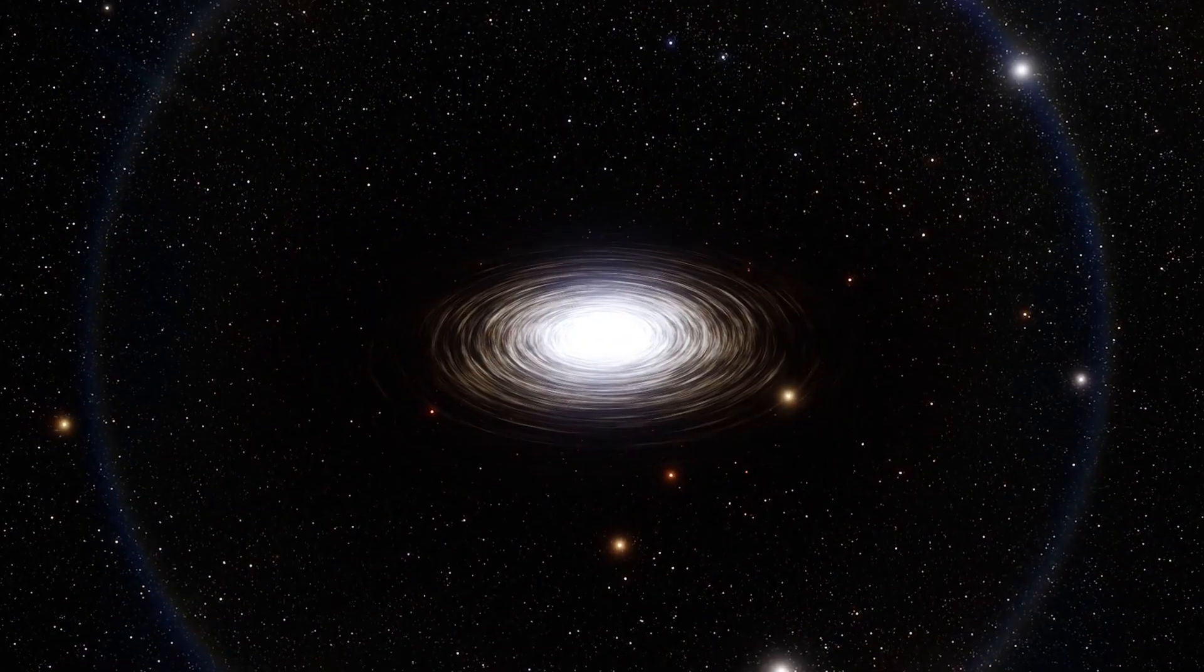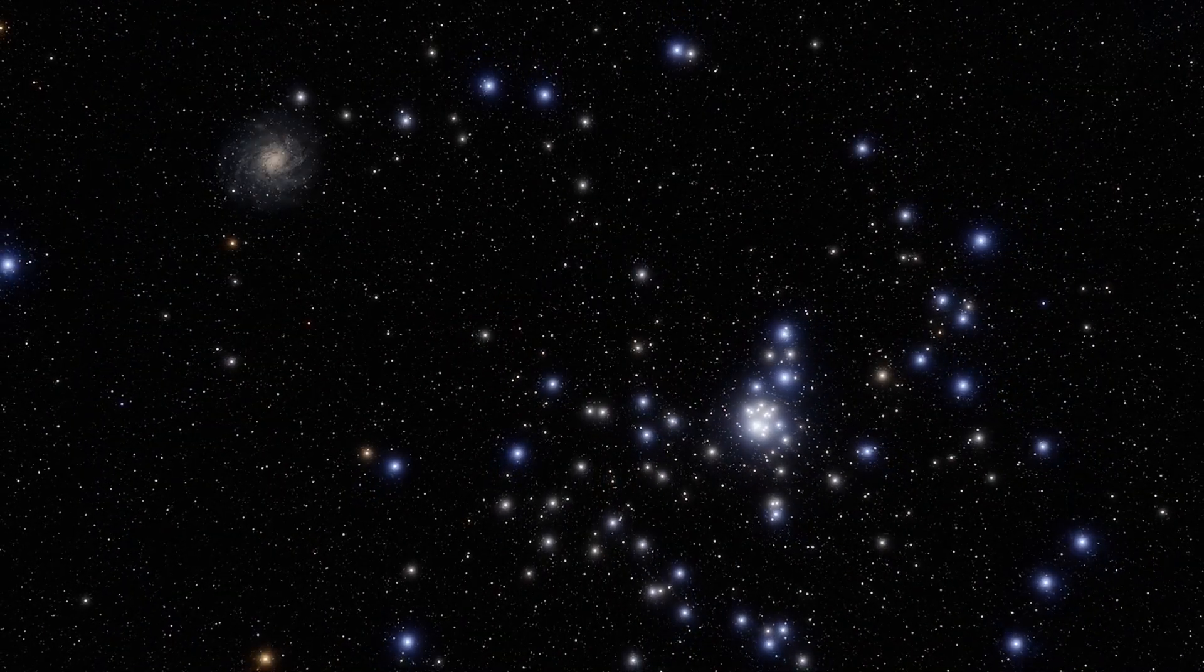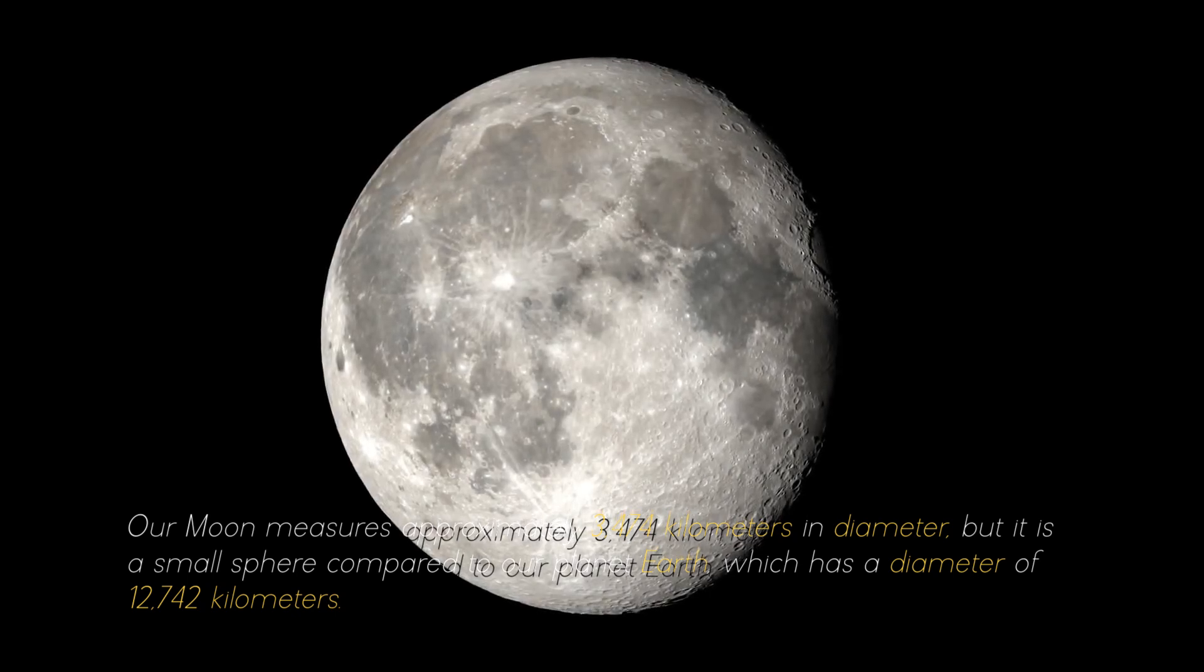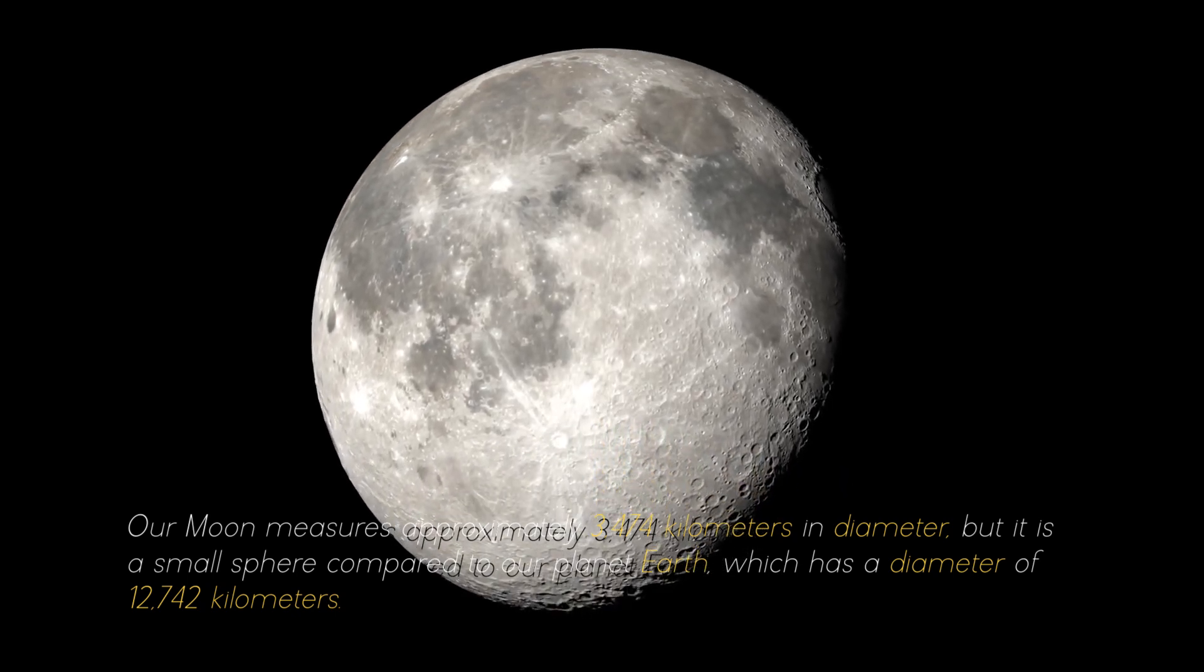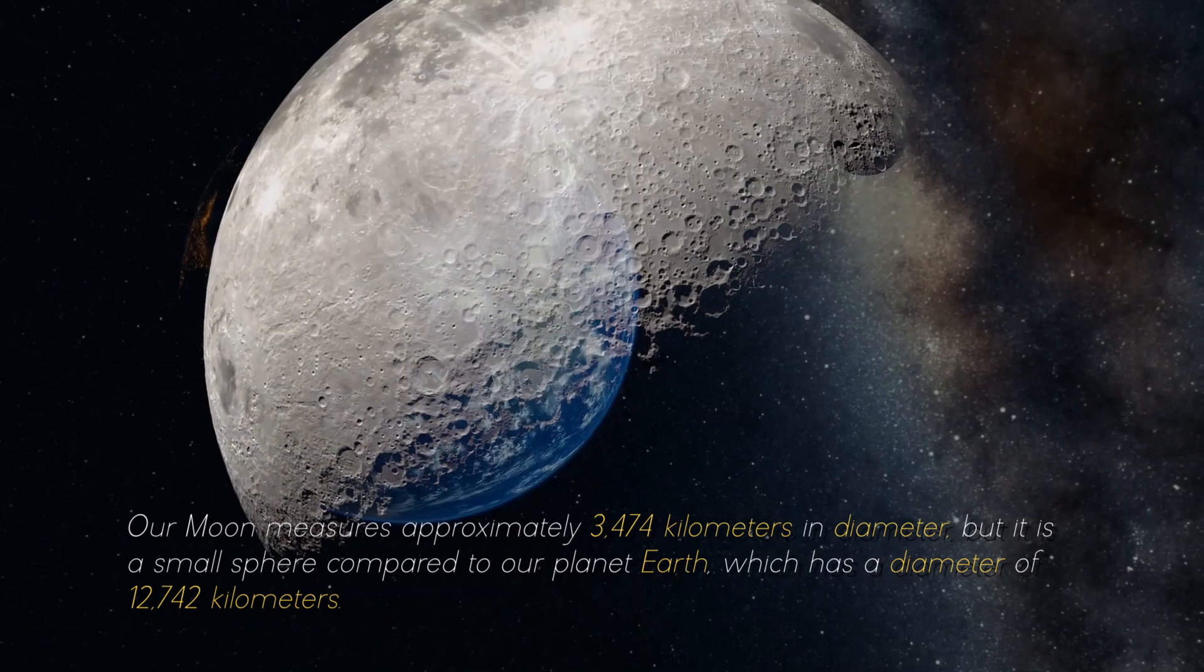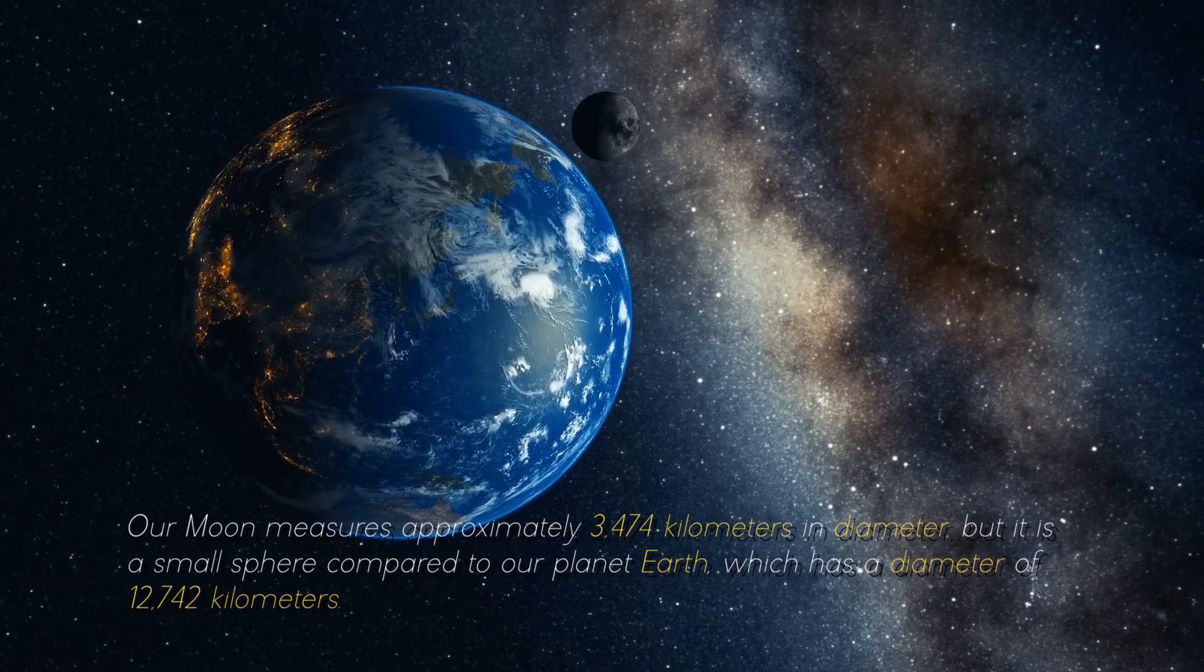To give you an idea of the colossal objects and structures that abound in the cosmos, it is necessary to start at the beginning. Our moon measures approximately 3,474 kilometers in diameter, but it is a small sphere compared to our planet Earth, which has a diameter of 12,742 kilometers.